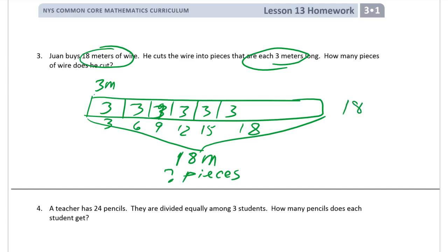So we have 18 divided by 3 equals 1, 2, 3, 4, 5, 6. We have 6 times 3 equals 18, or 18 divided by 3 equals 6. He cuts 6 pieces of wire.